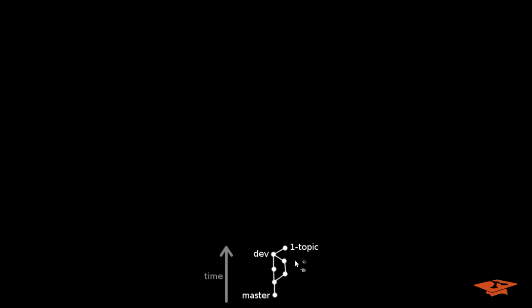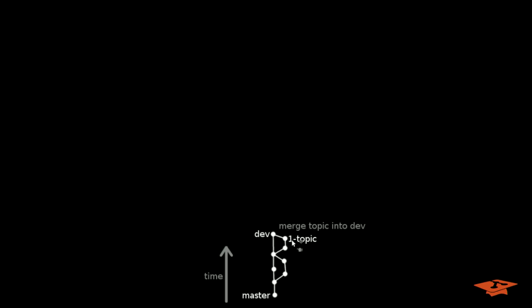Let's start with the basics. I always draw the commit tree with time going upward. Here's an example where you have a very small commit tree — the master branch is at this commit, the dev branch is at this commit. Now as time marches forward, people create topic branches, and the topic branch moves as commits are made on it. Then eventually the topic branch gets merged into a bleeding-edge branch — in this case we're going to call that the dev branch. So in this workflow, master is considered the stable state, and dev marches along as people integrate their topic work with it.